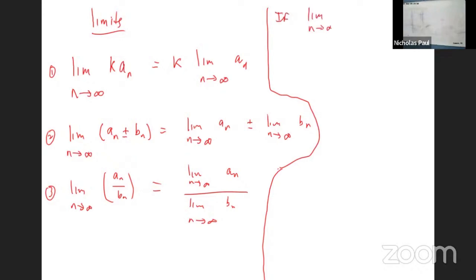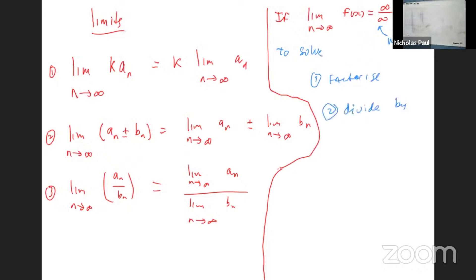If you have the limit as n approaches infinity of some function F(x) and you plug in the values and get infinity over infinity — what is that called? It's said to be undefined — an indeterminate form. If it's undefined, you have two or three techniques you can use to simplify. The first is to factorize. If that doesn't work, divide by the highest power. And the last option is L'Hôpital's rule. Those are the three options if you end up with an indeterminate form.